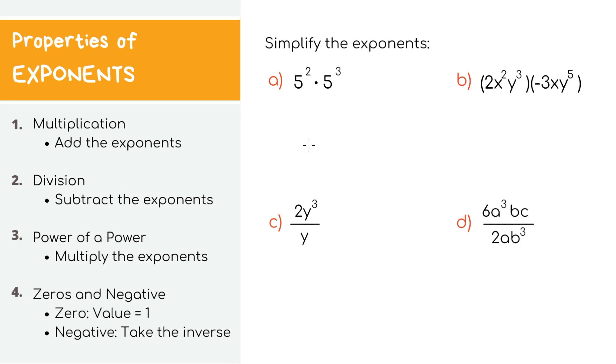First up, properties of exponents. For the first rule, when you see the same numbers with exponents that are being multiplied, you can combine the base number and just add the exponents to simplify. In our example, both values have the same base of 5, which is an important prerequisite to be able to use this rule.